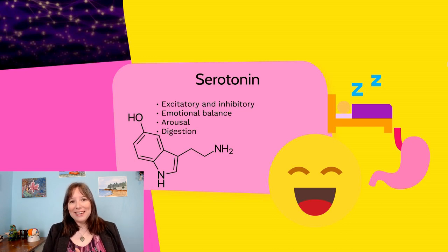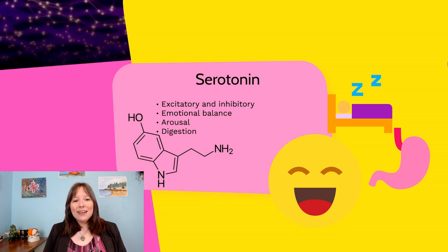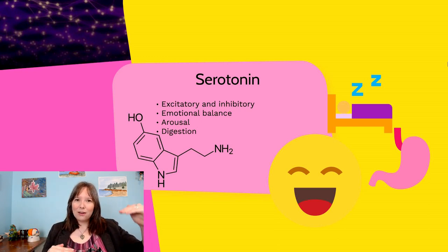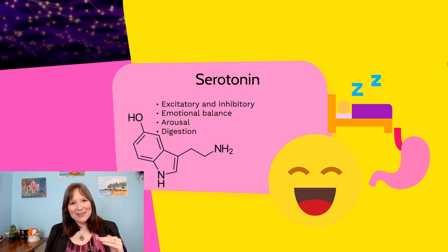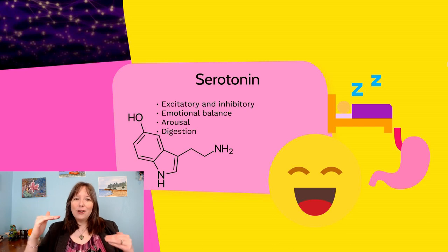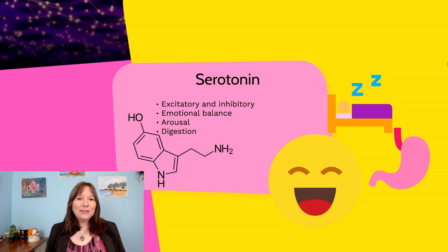Serotonin is associated with SSRIs and antidepressant medications. It works a bit like the Goldilocks zone — it helps to keep things in balance. It's a neurotransmitter that helps us feel happy, but not overly manic or overly aroused. Too much serotonin could be bad, and not enough could also be bad — we want to be in the middle. In addition to mood, serotonin also helps regulate arousal, keeping us in that good middle zone between wired and sleepy. It's also a neurotransmitter that aids in digestion.